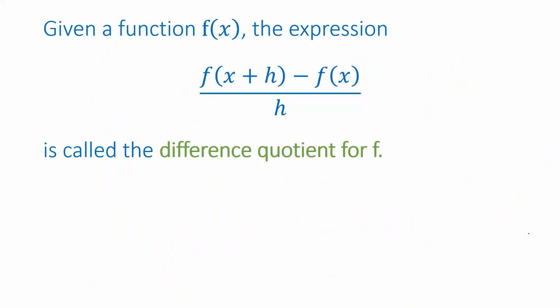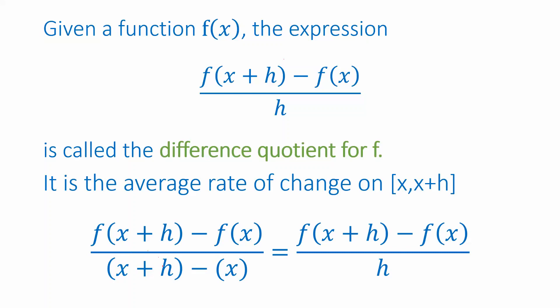So we've run into this expression several times where we have plus h and notice what was happening whenever we plug in x plus h minus x those two x's cancel which is why we ended up with just an h in the denominator. And so a lot of times this is the way you'll see the expression written. And this quantity has a name it's called the difference quotient for the function f. And as I mentioned before it becomes very important when you start to study calculus.